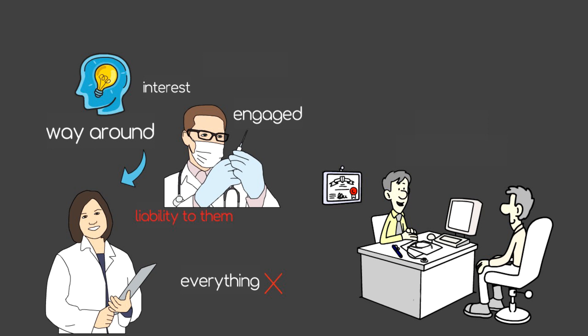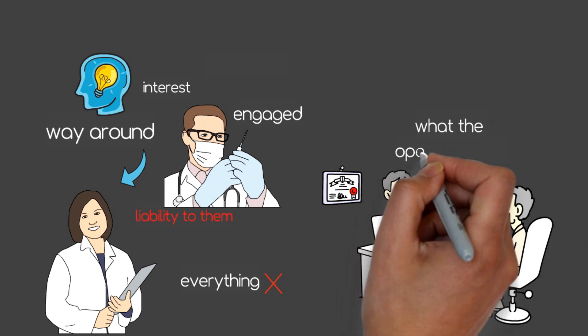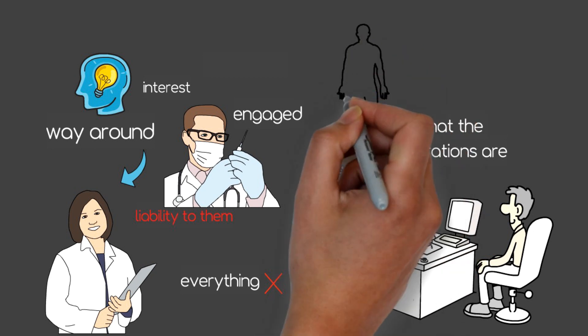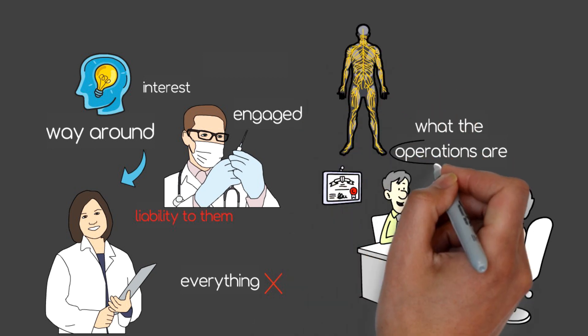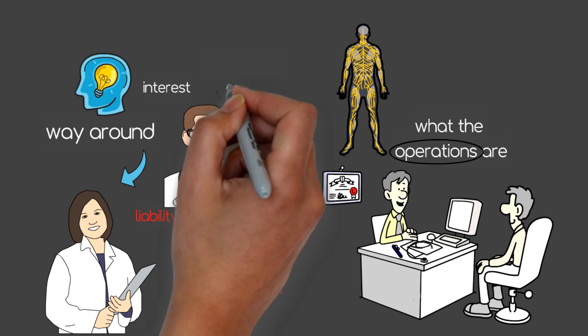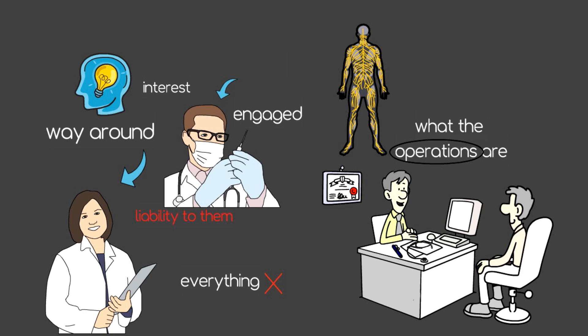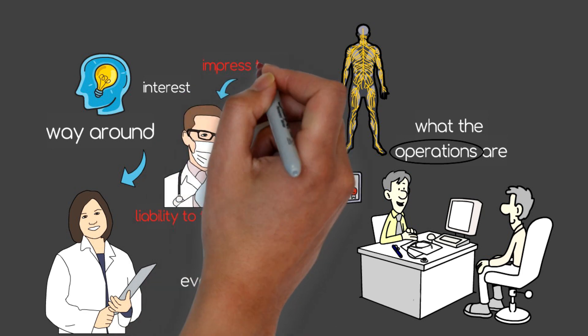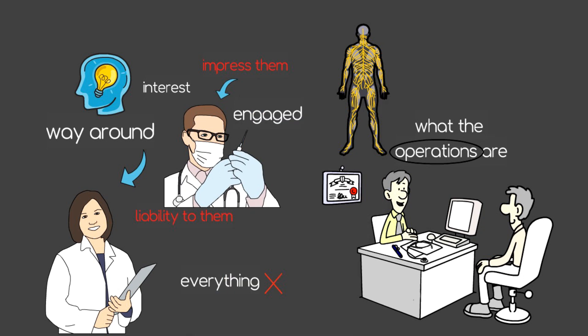If it's a surgical specialty, call their office or call the OR and ask them what the operations are for the next day and just look up in general the anatomy that's relevant to that operation and kind of what they'll be doing. You're going to be a lot more engaged and if they happen to ask you something even as a joke, you'll know what you're talking about at least somewhat and that might impress them. The easier you make this on them, the better it's going to be.